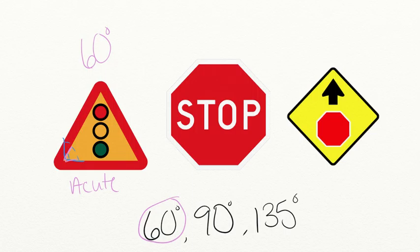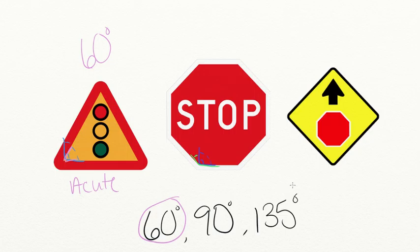Let's move to the stop sign. We're going to compare the stop sign's corner angles to 90 degrees, so I'm going to draw a right angle and see if the stop sign's angle is larger, smaller, or equal to 90 degrees. If we look at the angle of the stop sign, which I'm outlining in green, we can see that it goes past 90 degrees. So it's greater than 90 degrees, meaning it's 135 degrees — a stop sign is made out of 135-degree angles.